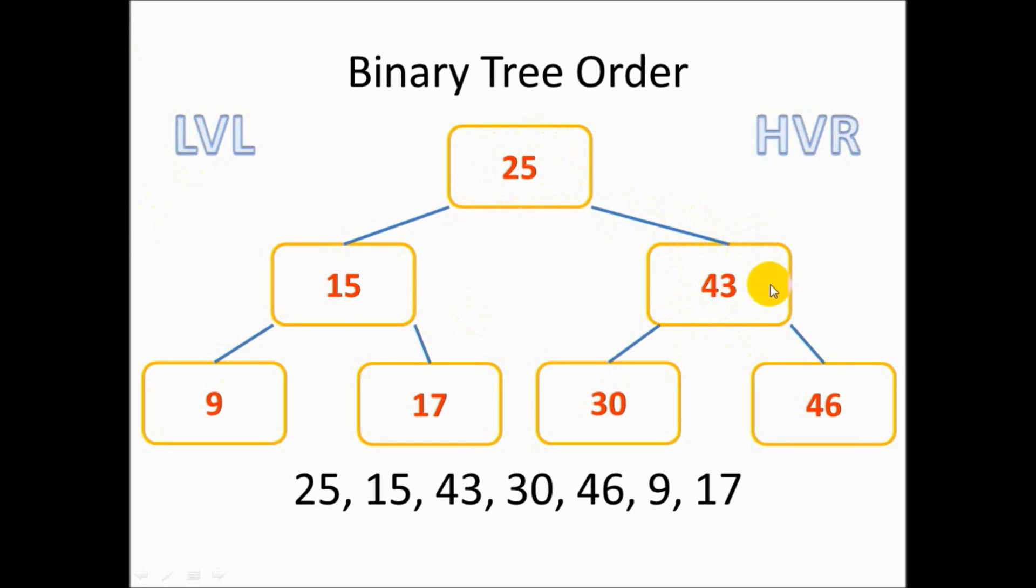And then we look at 43. Does it come before or after 25? It comes after. Then we look at 30. Does it come before 43? So it's a left leaf node. Then we look at 46. Is it before or after our node of 43? Yes, it's after. So that's why 46 is on the right-hand side. Higher value right. Lesser value left. And then we hit 9. So we go all the way up to our root node and all the way down. We keep going to the left because it's less than 15.